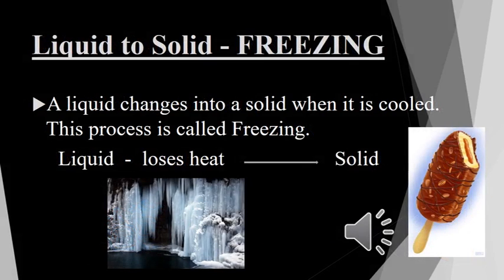The next process is freezing. A liquid changes into a solid when it is cooled. This process is called freezing. The word equation shows that when a liquid loses heat, it changes into a solid. Examples are freezing ice cream and freezing water in the form of crystals of ice in a cold place.